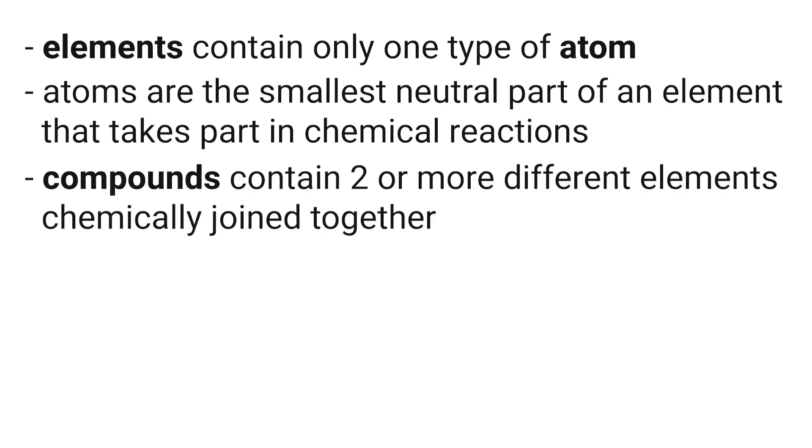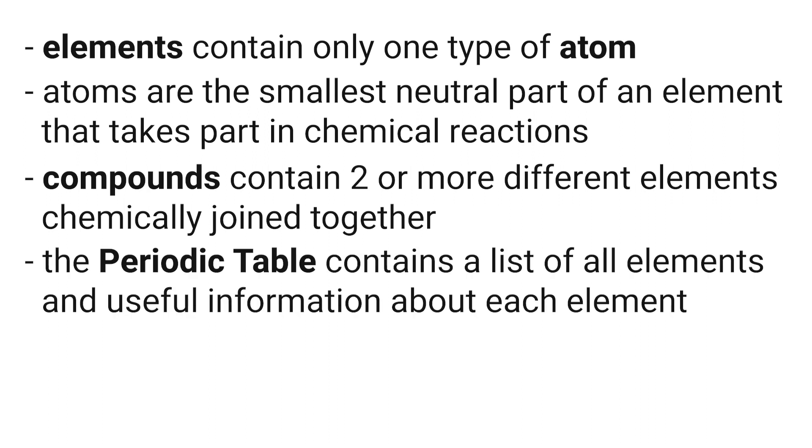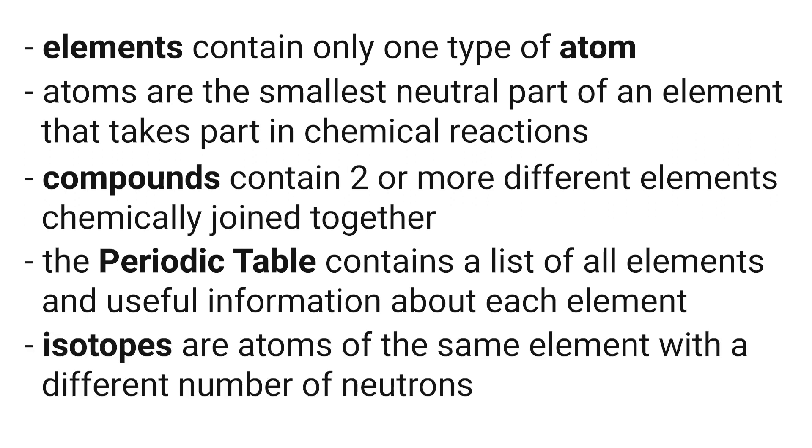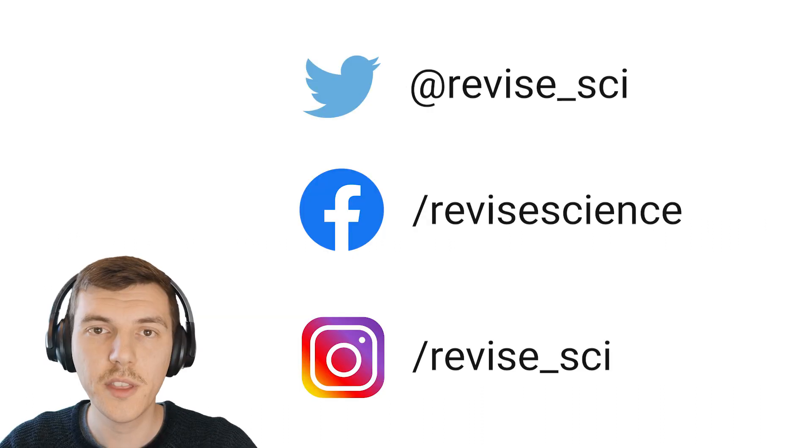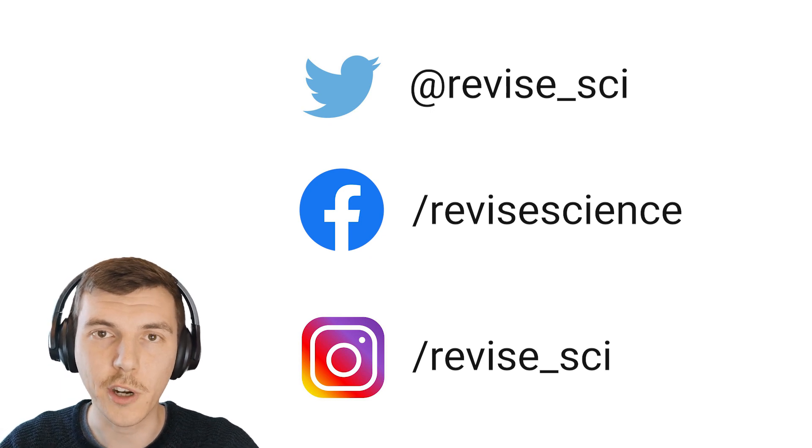Today we've learned that elements contain only one type of atom, and that atoms are the smallest part of an element. Compounds are substances that contain two or more different elements that have been chemically combined, and each element can be found on the periodic table. The periodic table gives us lots of useful information about each element, like its symbol and its proton, neutron, and electron numbers. We've also learned that elements can have isotopes, which have the same numbers of protons and electrons, but different numbers of neutrons. Thanks for watching, and tune in next time when we'll be covering more about chemical reactions and using the periodic table.